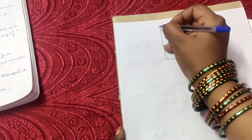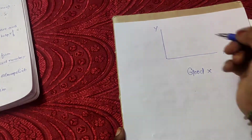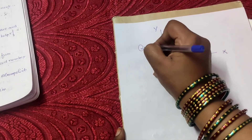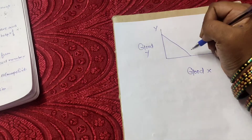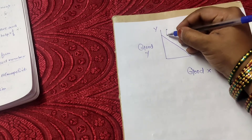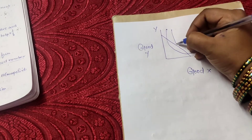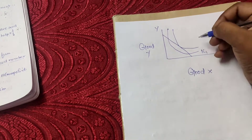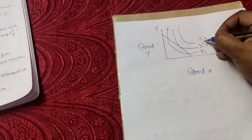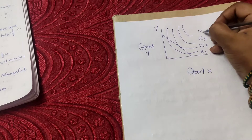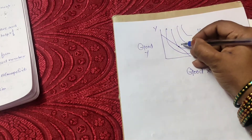Now let's draw the diagram. The horizontal axis represents Good X and the vertical axis represents Good Y. This is the budget line, and these are the indifference curves — IC1, IC2, IC3, and IC4. The indifference curve should touch the budget line. Where there is tangency, we give a point.